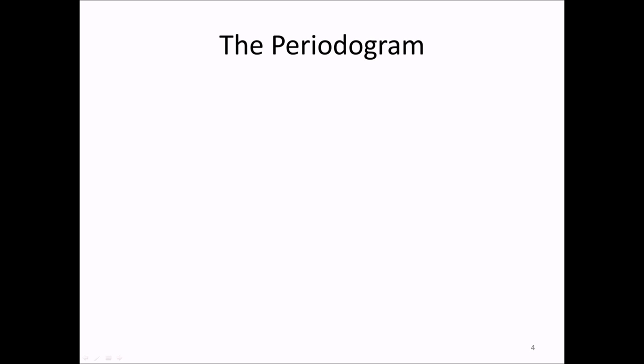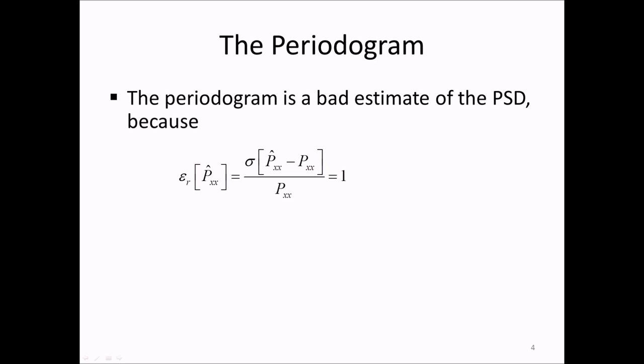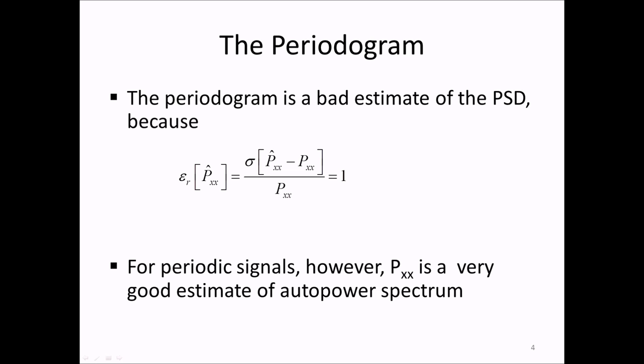The periodogram is an estimate of the PSD. It was discovered early, however, in the development of the periodogram that it has some bad characteristics. The problem with the periodogram is that its normalized random error equals unity. This means that the error is 100%, and this is independent of the amount of data you have. It does not help to measure more data. It does not improve the periodogram estimate. For periodic signals, however, the periodogram is a good estimate, provided there is no or little noise.